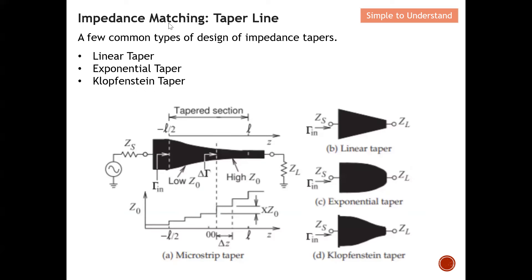There are a few common types of impedance taper line. The linear type means the impedance changes in a uniform, straight-line fashion — all increments increase in a linear manner. Next is the exponential taper, where the line takes an exponential form — you can have higher impedance at one end transitioning exponentially to lower impedance. Then there is the Klopfenstein taper, which is the most effective, having the minimum reflection coefficient — it is a popular method, though the design is quite complicated.